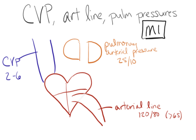First we've got our CVP measured in our superior vena cava. Normal is 2 to 6 millimeters of mercury, although it might be higher if someone is on positive pressure ventilation on a mechanical ventilator. We've got our pulmonary arterial pressure which traditionally is quarters over dimes, so 25 over 10 — that would be a normal pulmonary artery blood pressure.